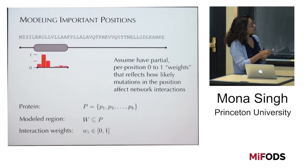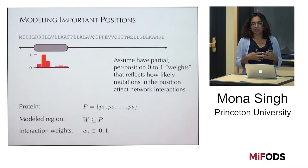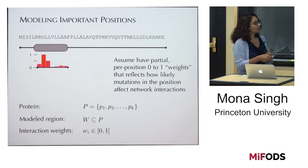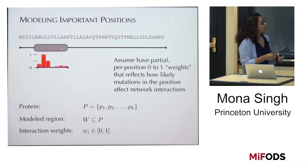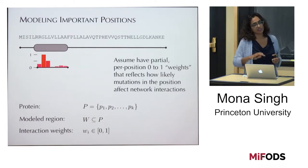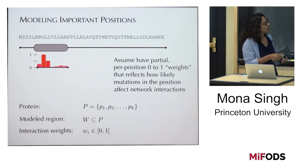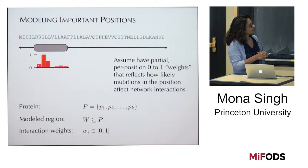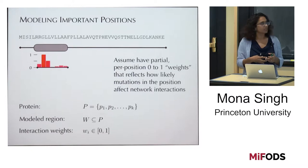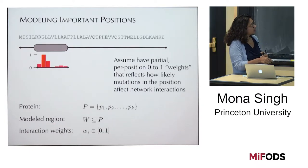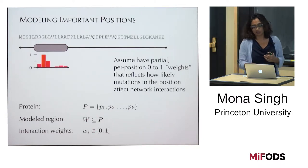We have our protein sequence — a string — and we assume we know which positions within it take part in interactions. In practice, we may only have that for subregions, and in some cases it's binary — yes or no — this participates in an interaction, because you've seen a 3D structure. In other cases, we've inferred scores or weights between 0 and 1, reflecting how likely mutations in those positions are to be involved in interactions. So we have a modeled region with per-position interaction weights.